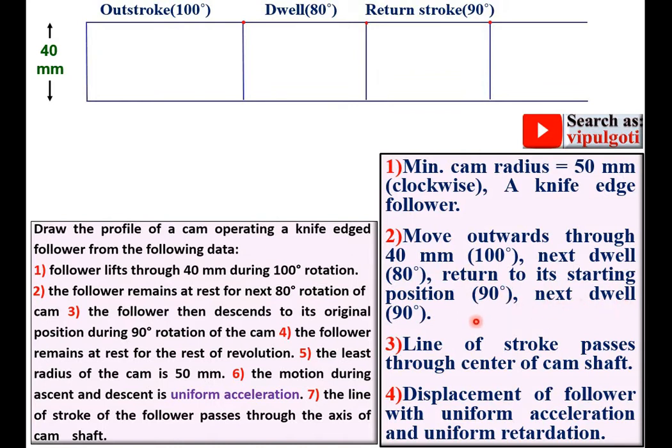And you can find the next remaining dwell is 90 degrees by subtracting these three angles from 360. So you will get as 90 degrees.